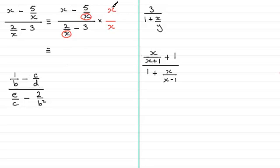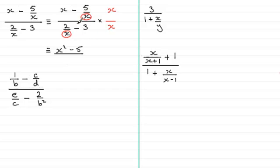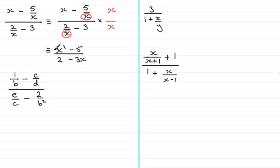What we get is x multiplied by x, which is x squared. And then we get minus 5 over x times x — that x cancels out with this x, just leaving minus 5. And then the division line. At the bottom of the fraction, 2 over x times x gives us 2 because those two x's cancel. And then minus 3 times x gives us minus 3x. We've got a fraction now that takes up two levels.